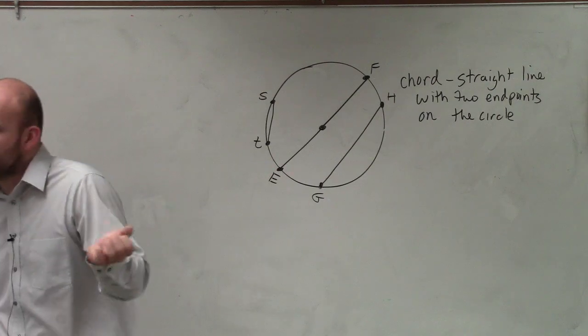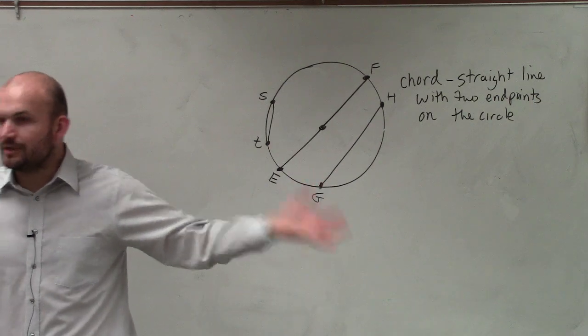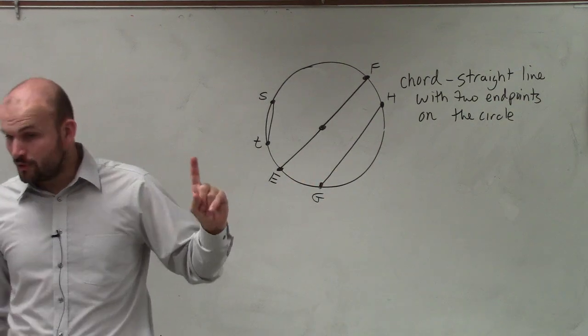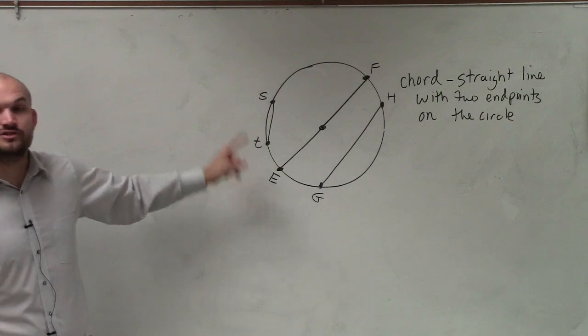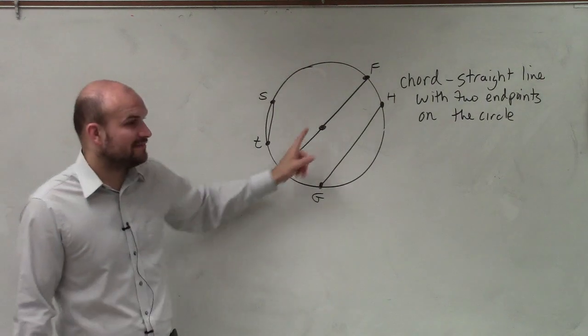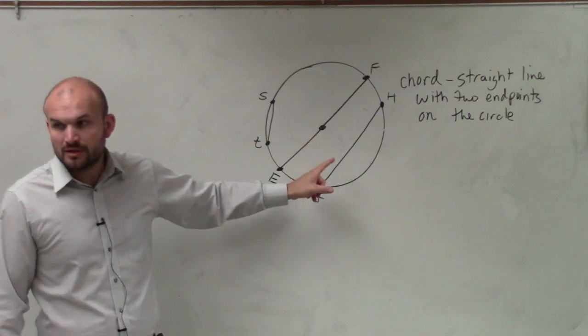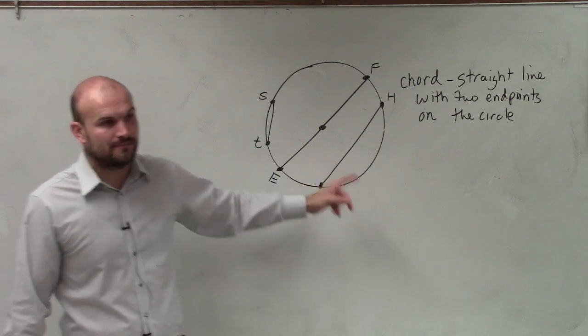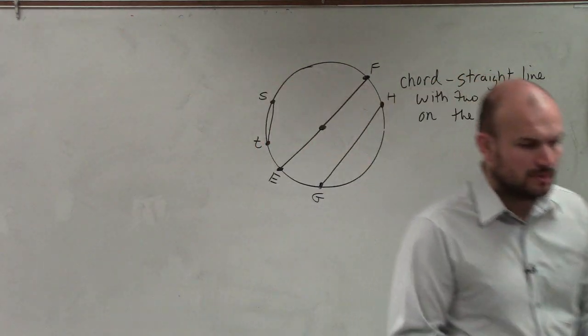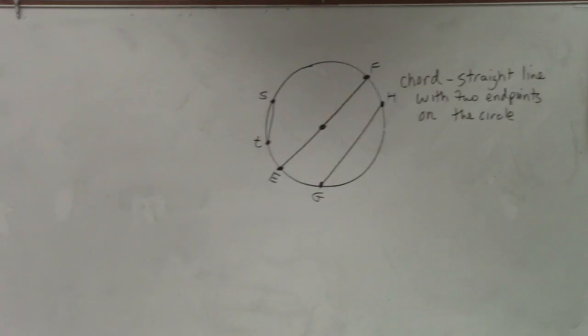Any time you're drawing a line that has two endpoints on the circle, that represents a chord. Remember, the most famous chord is the diameter, because there's only one chord that goes through two endpoints and through the center. So a diameter is a special chord.